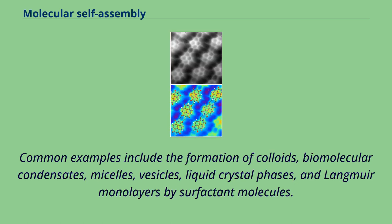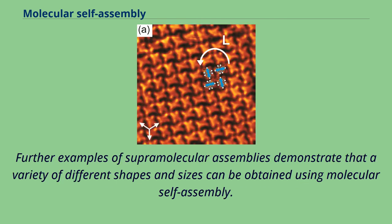Common examples include the formation of colloids, biomolecular condensates, micelles, vesicles, liquid crystal phases, and Langmuir monolayers by surfactant molecules. Further examples of supramolecular assemblies demonstrate that a variety of different shapes and sizes can be obtained using molecular self-assembly.